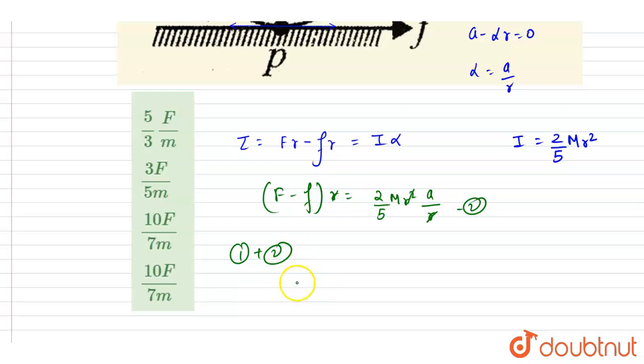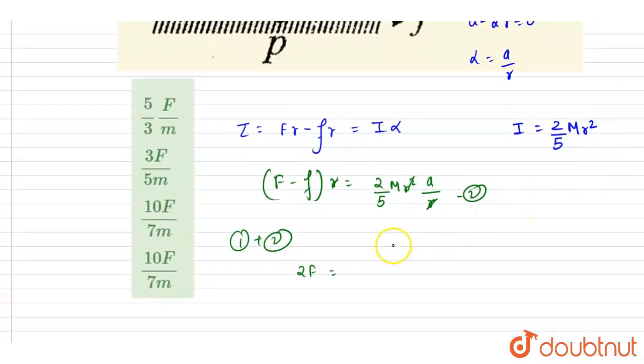So if you see, it will be 2F equals ma plus two by five ma, so it will be seven by five ma. One plus two by five is seven by five ma.